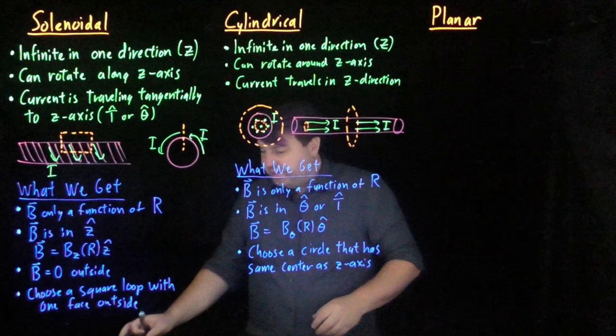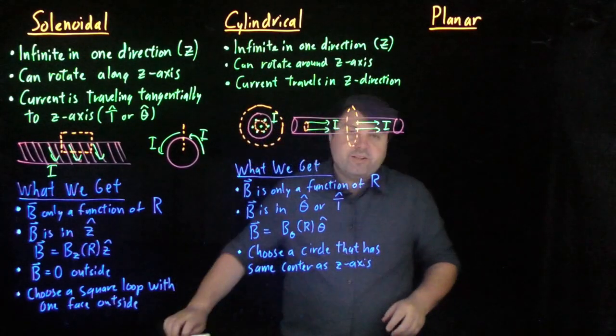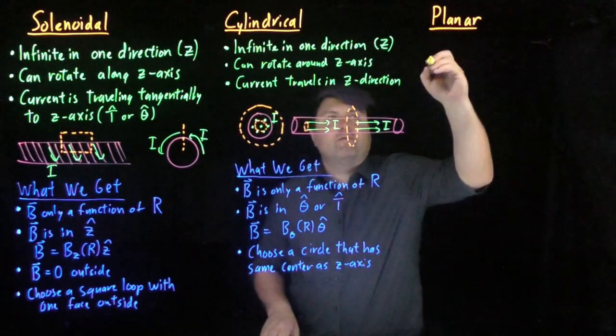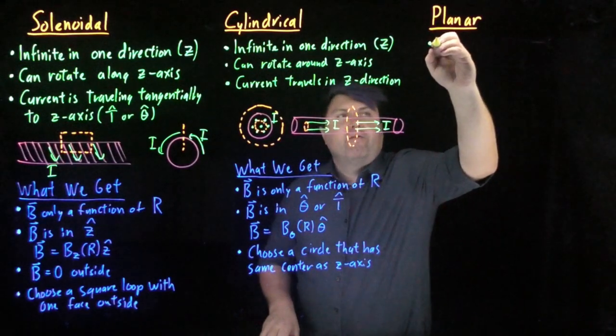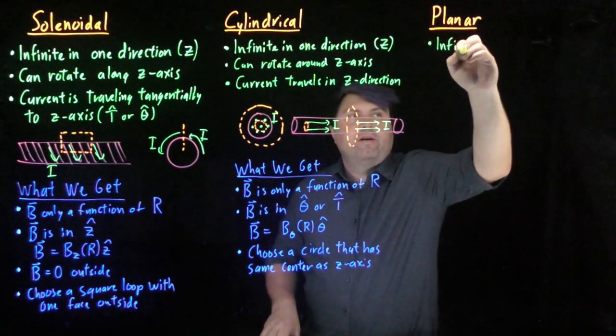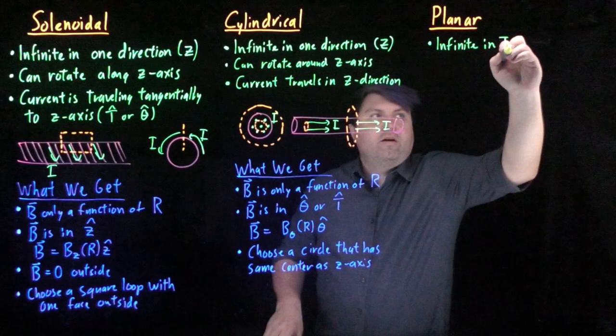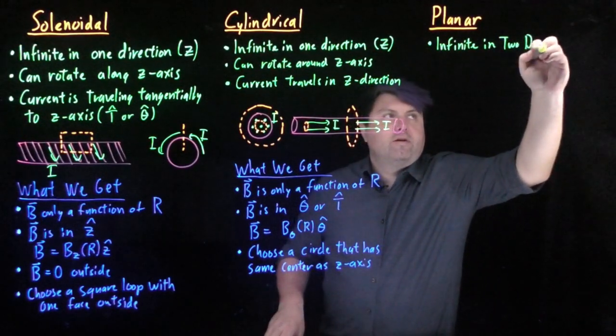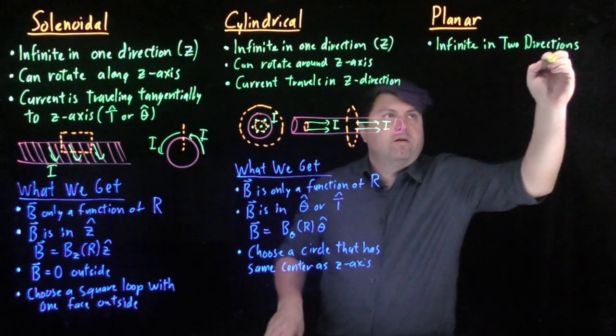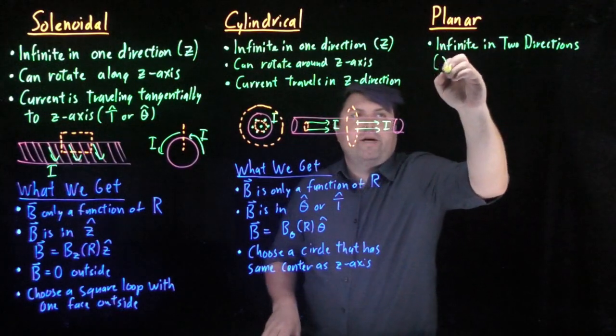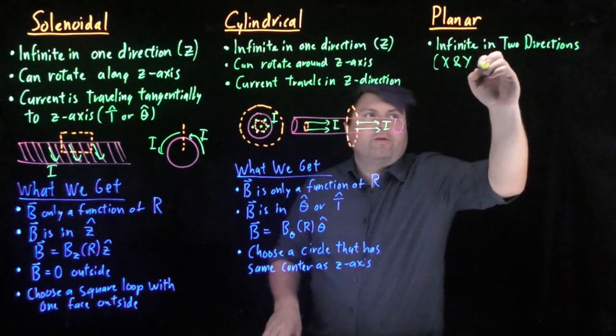For our planar symmetry, we don't deal with planar too much. There's a couple of problems, so we'll talk about it just briefly. Our planes are infinite in two directions. We'll say x and y, for example.